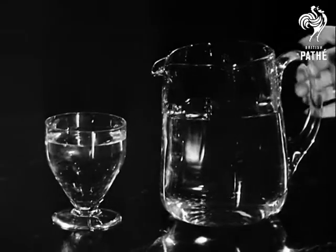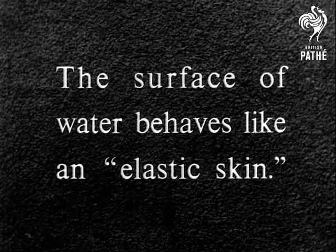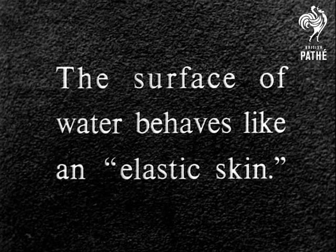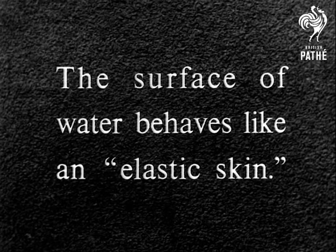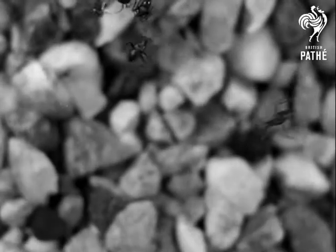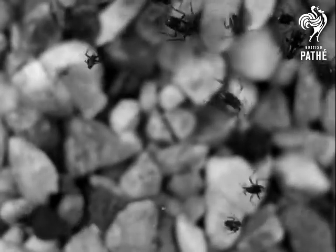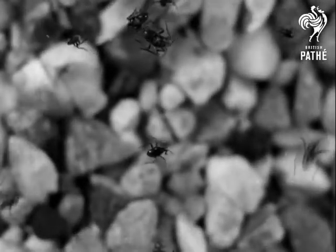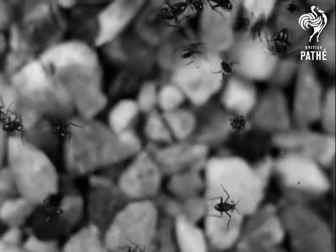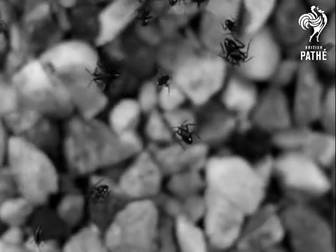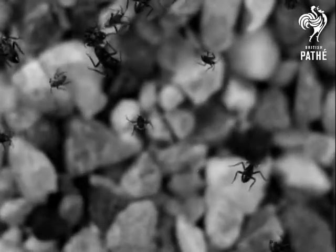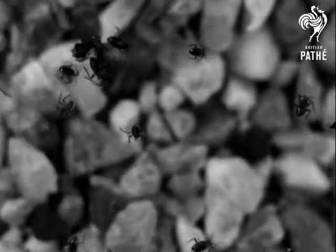Now the surface of a liquid — water for example — behaves like an elastic skin. This skin is strong enough to support a certain amount of weight. These small water creatures are actually running about on the surface skin of water without penetrating it, and therefore without wetting their legs. The existence of the elastic skin on water can be shown in many ways.